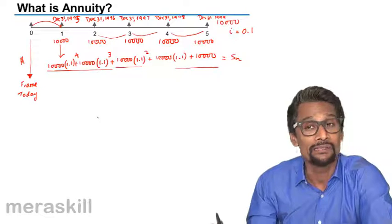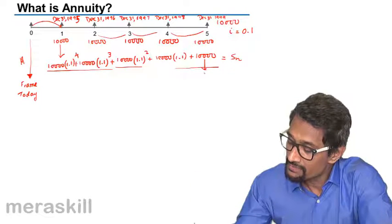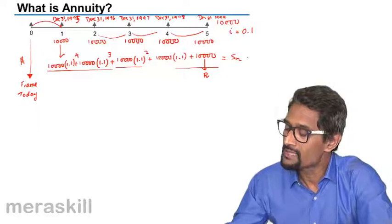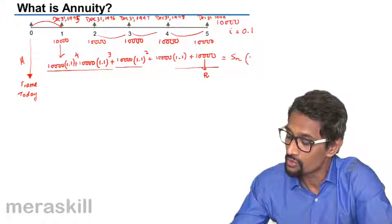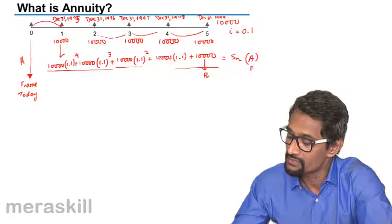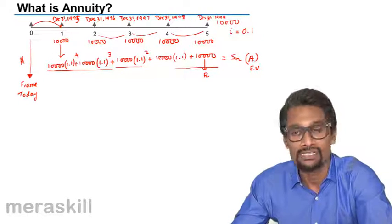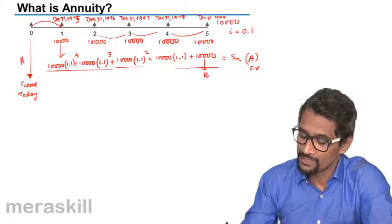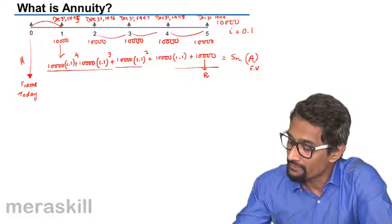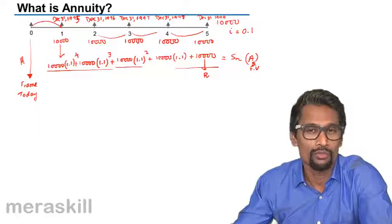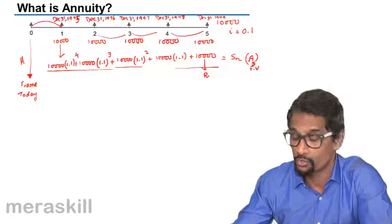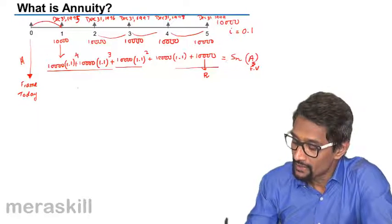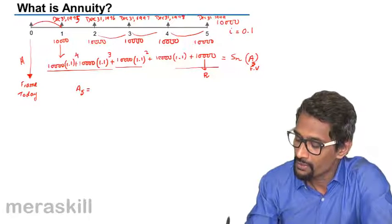So the net future value turns out to be this. We call the installment amount R, and the total accumulated amount is called S_n, or we can call it A — the future value. For five installments we call it A₅; if there were six periods we'd write A₆.